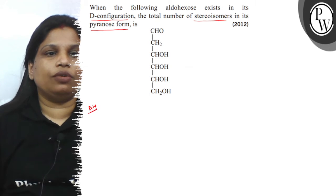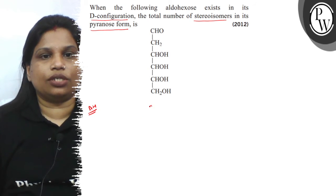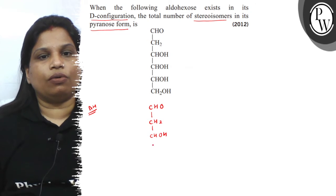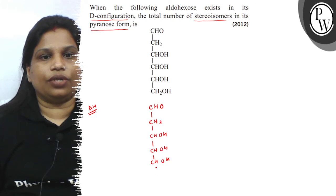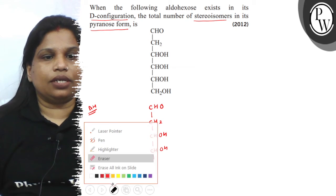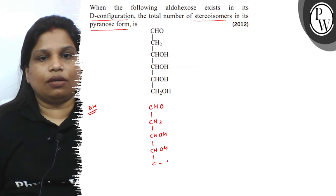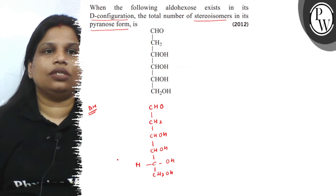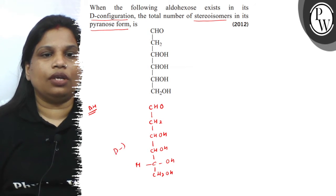So, for D configuration, we have to write down the structure of this aldohexose in D configuration. This is CHO, then CH2, this is CHOH, CHOH, CHOH, CHOH, and for the D configuration, this CHOH will be present in this manner. So, this is the D configuration of the aldohexose.